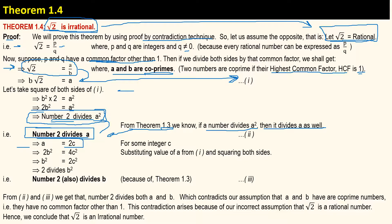Since 2 is a factor of a, we can write a is equal to 2 times c for some integer c. Substituting this value into equation 1 and simplifying, we get b² is equal to 2c², which shows that 2 divides b². By Theorem 1.3, this means 2 also divides b.